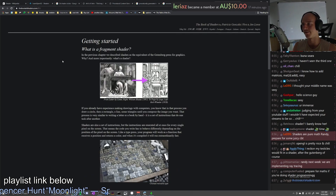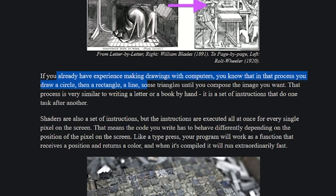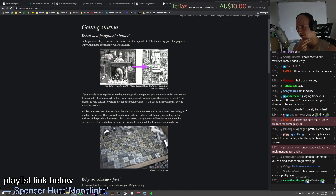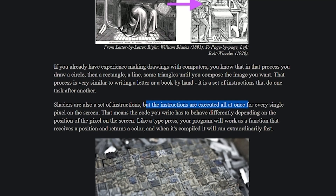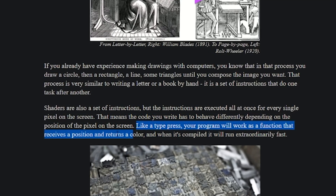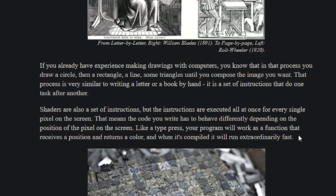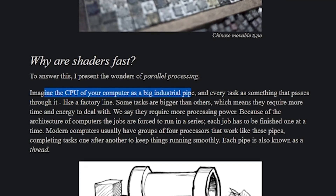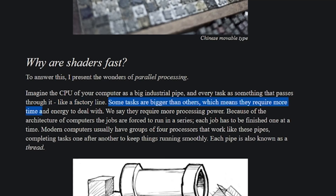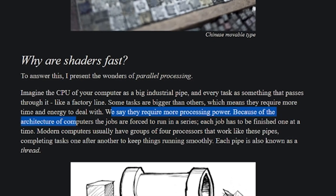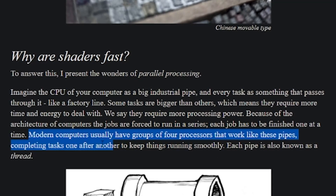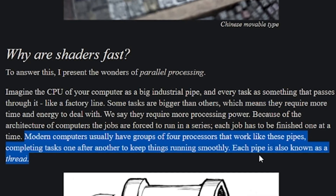What is a fragment shader? If you already have experience making drawings with computers, you know that in the process you draw a circle then a rectangle — a set of instructions that do one task after another. Shaders are also a set of instructions, but the instructions are executed all at once for every single pixel on the screen. The code you write has to behave differently depending on the position of the pixel. Like a type press, your program works as a function that receives a position and returns a color, and when compiled will run extraordinarily fast — parallel processing. Imagine the CPU as a big industrial pipe, and every task passes through it like a factory line.